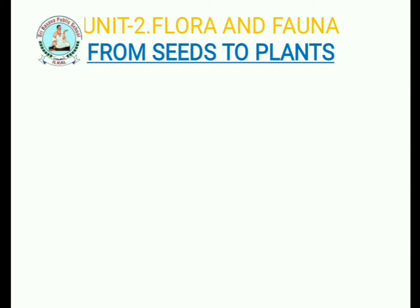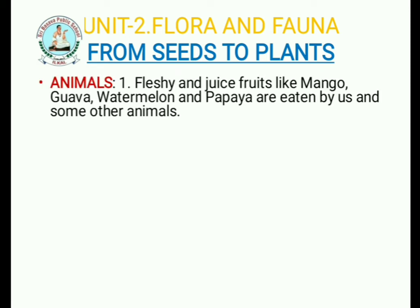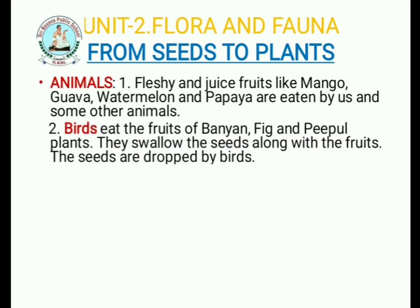Next, we are discussing animals. Animals also disperse seeds. Which type of seeds do animals disperse? Fleshy and juicy fruits like mango, guava, watermelon, and papaya are eaten by us and some other animals, and their seeds are spread or scattered by animals. Some seeds are also dispersed by birds — birds eat the fruits of banyan, fig, and peepal plants.